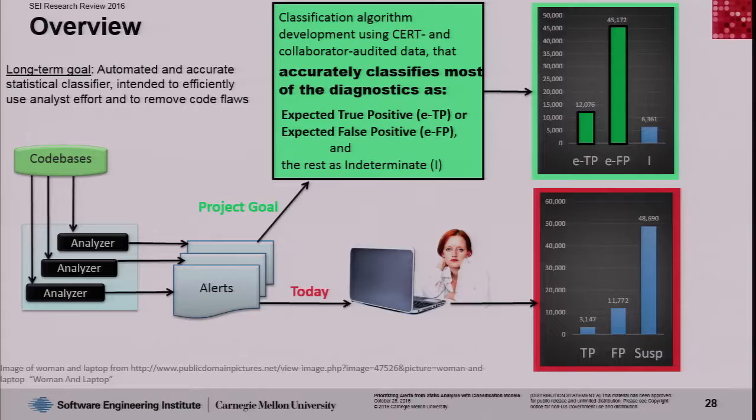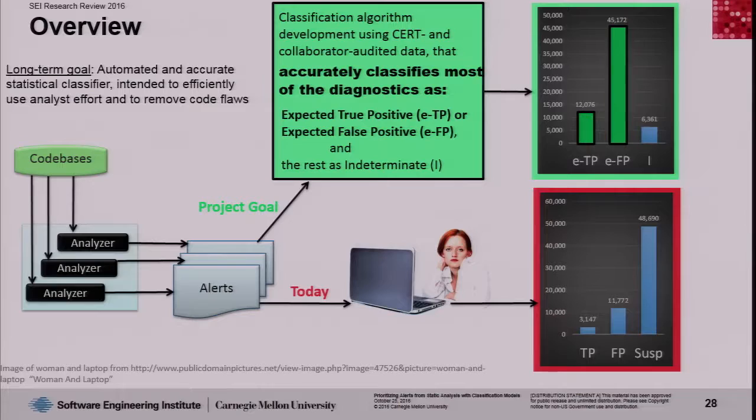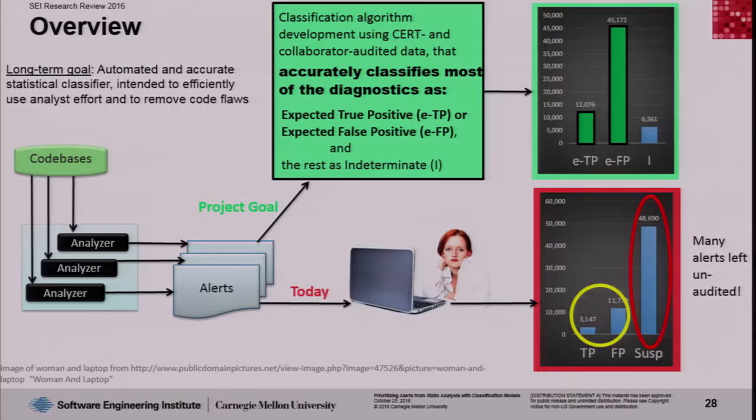You can see in this diagram the process where code bases, on the top left, are analyzed by one or more static analysis tools, each of which then outputs a set of alerts or diagnostics. Today, following the arrows at the bottom, the alerts must be analyzed by humans manually, in order to determine if there truly were flaws or if there were false positives.